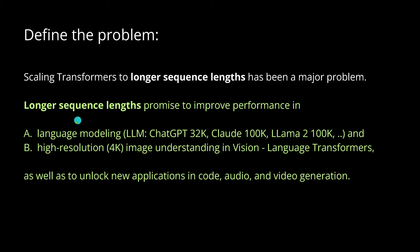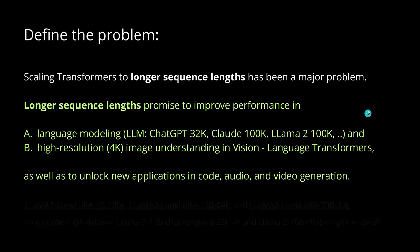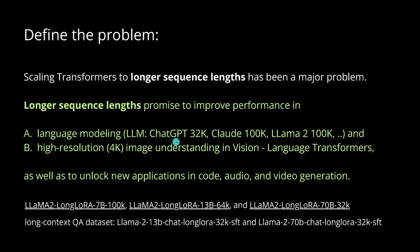We're not only focusing on language modeling, but also vision transformers. If you have a high-resolution 4K or 8K image and you want to understand or manipulate the content, we use vision-language transformers. For both LLMs and vision-language transformers, we want to increase the sequence length to unlock new applications, including audio and video generation. By the end of this video, you'll have access to a LLaMA 2 model with 100,000 tokens, a 13B model with 64k, and a 70B model with 32k context length.